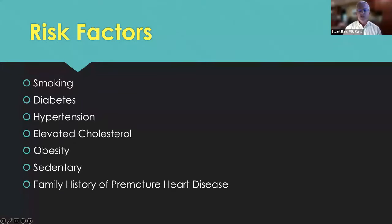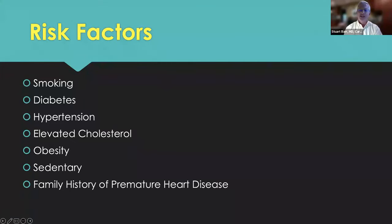Family history of heart disease means premature heart disease: if your father had a heart attack in his fifties or your mother in her sixties, that counts. If your dad had a heart attack in his eighties, that really doesn't give you any additional risk — pretty much everybody dies and most people who die, die of a heart attack. Eventually 25% of us will die from heart attacks. Those are the modifiable risk factors — except for family history — that can reduce your chances of having a heart problem down the road.